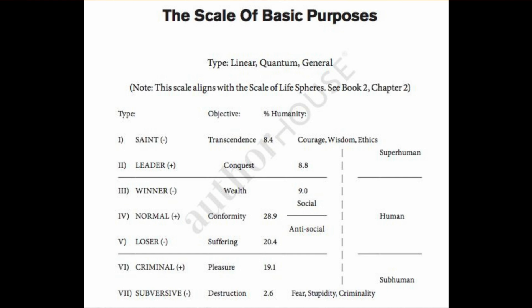The scale tells you what the person is about — what they're trying to do all the time. There are only seven basic purposes, and all others are subsets of these. This is described as a linear, quantum, general scale. Every scale is either linear or spiral, quantum or gradual, and general or specific. A spiral scale is one in which there is an apparent congruence between level one and seven, which leads people to mistake level one for level seven — a catastrophic mistake.